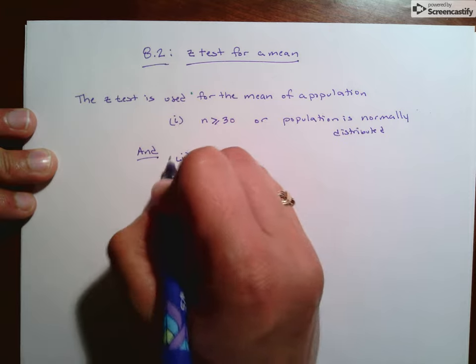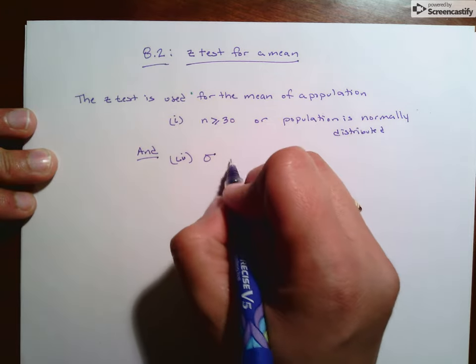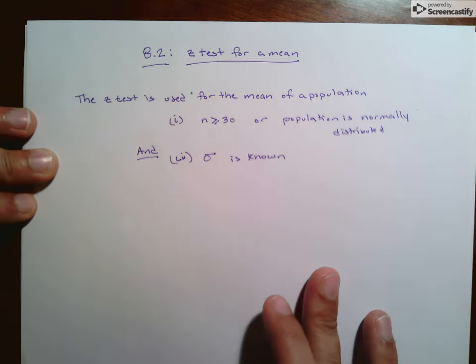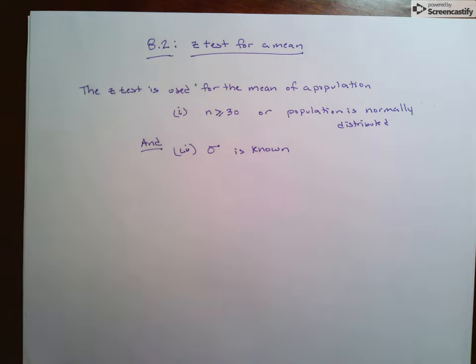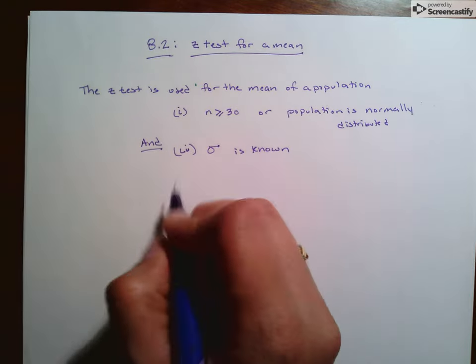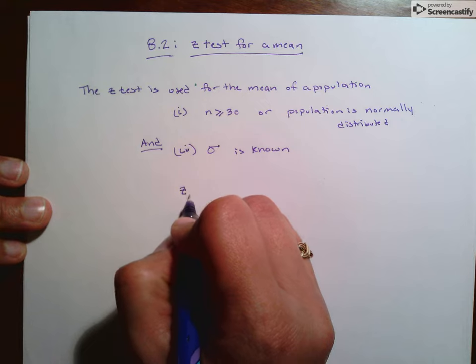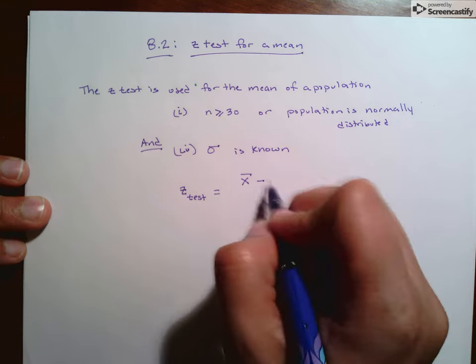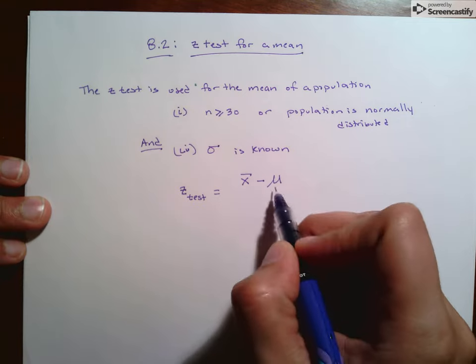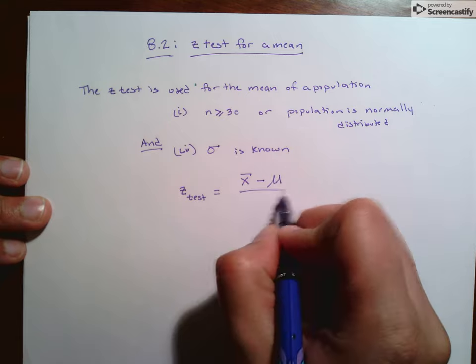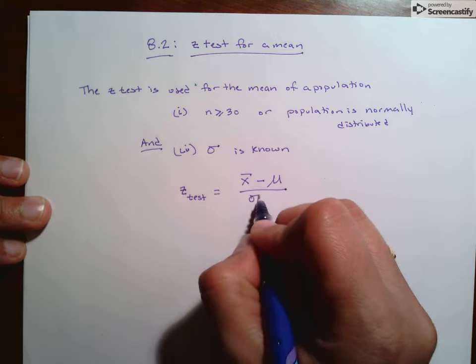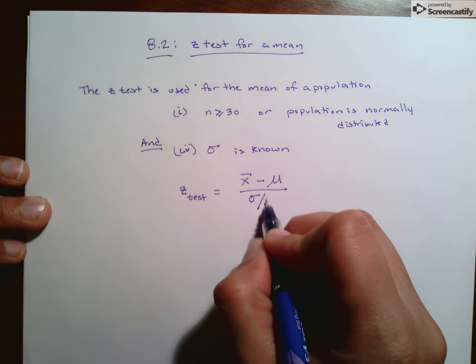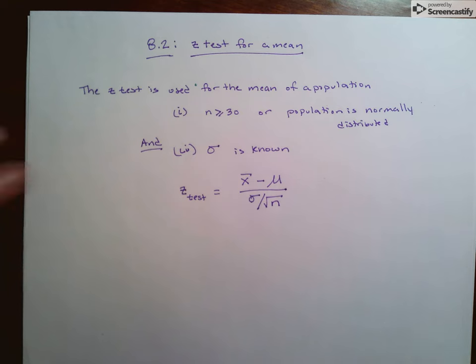And we have to know the population standard deviation. In this case, our test statistic is going to be z-test equals our sample mean minus the population mean that we're testing over our sampling standard deviation, which is population standard deviation over the square root of n.